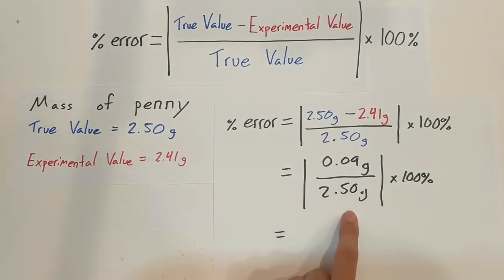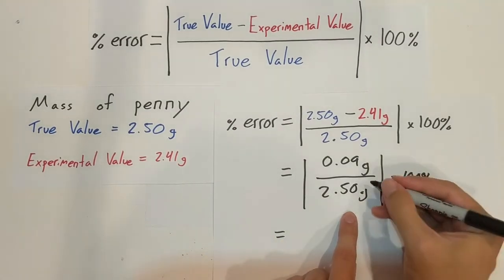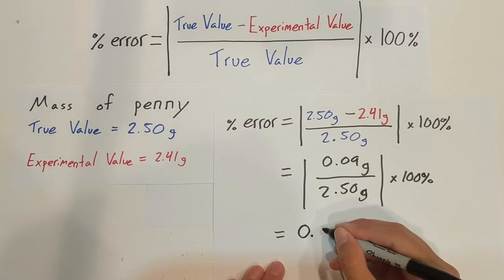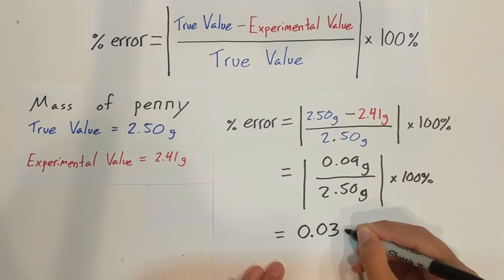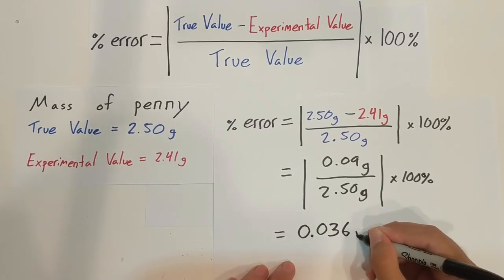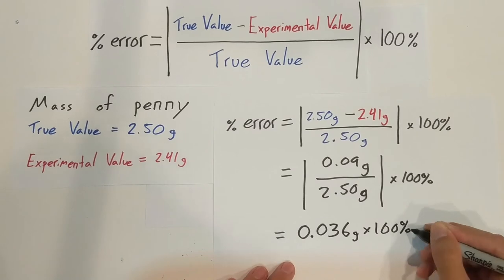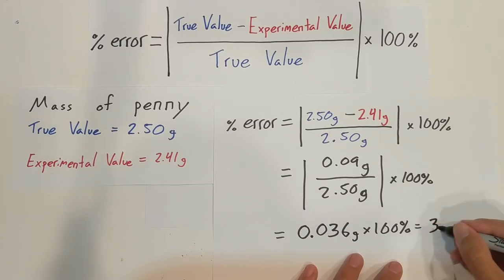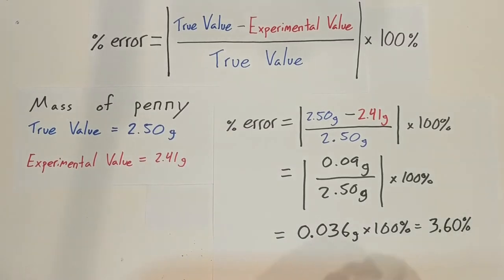And if we plug this now into a calculator, 0.09 divided by 2.50, we should get 0.036 times 100 percent, and then that would equal 3.60 percent. So our error for this measurement that we made was 3.6 percent error.